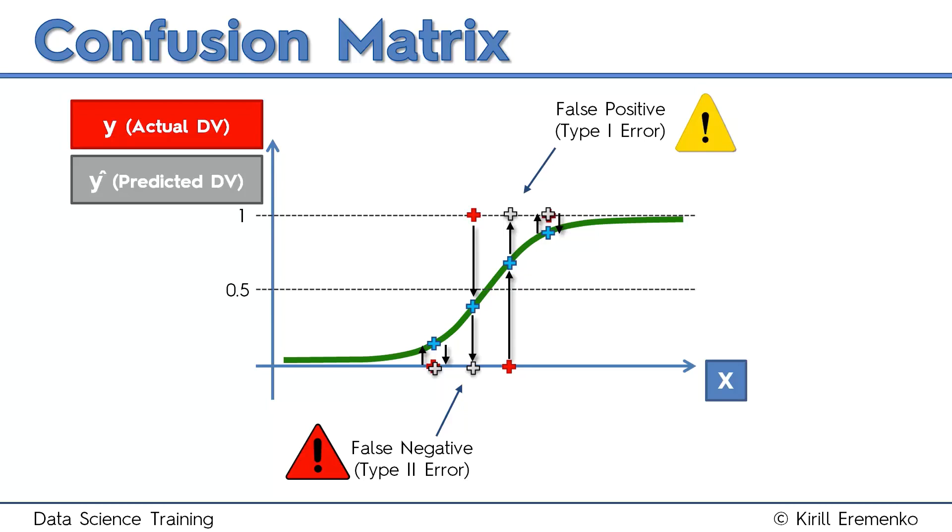And a false negative is when you predict that something won't happen, but it does actually happen, and that's a type 2 error. So, let's see what we can do with these.